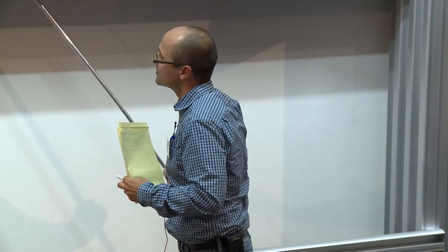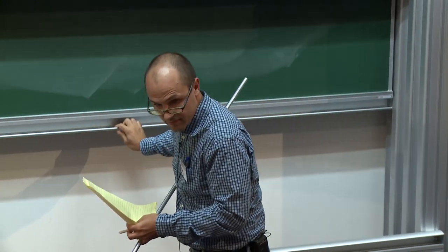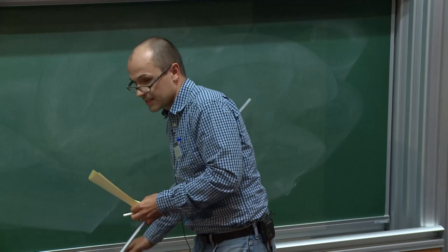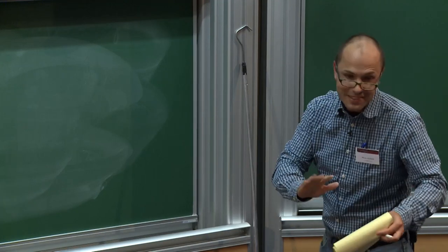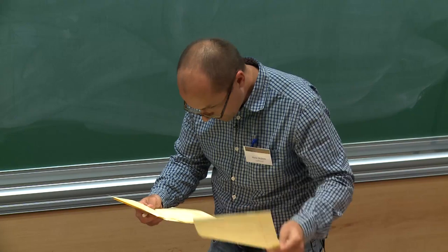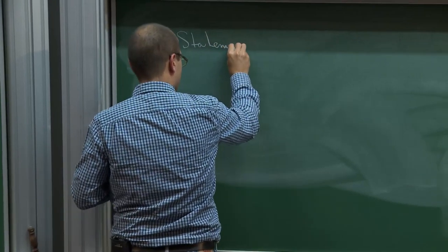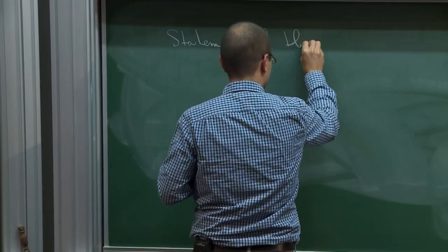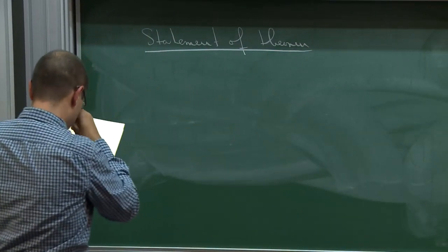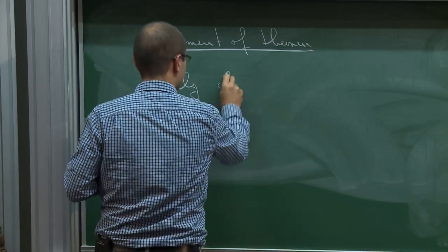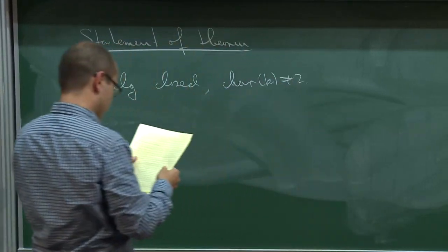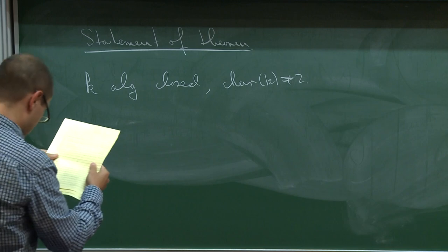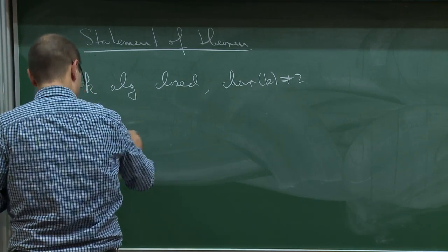So let me give a precise statement. K is algebraically closed, characteristic not two, for some technical reasons. And X over K is a K3 surface.